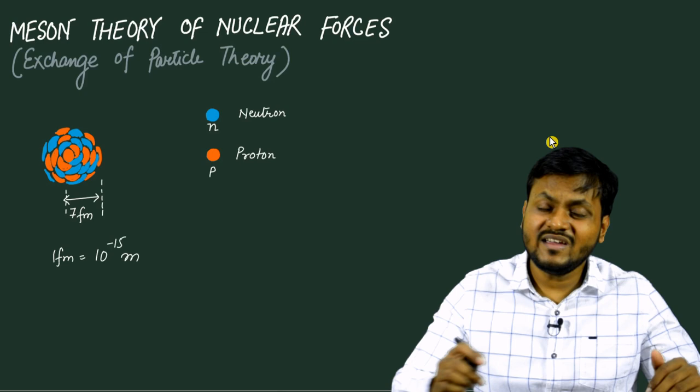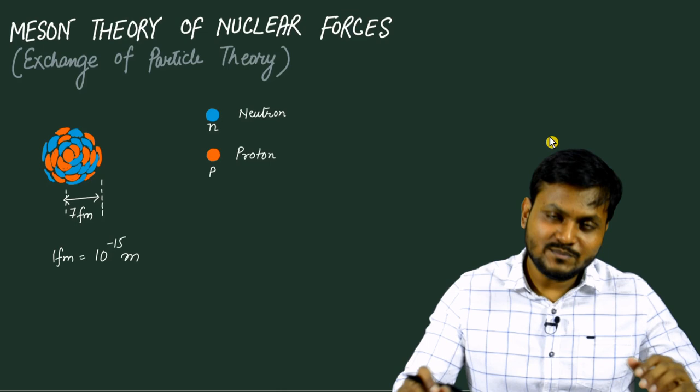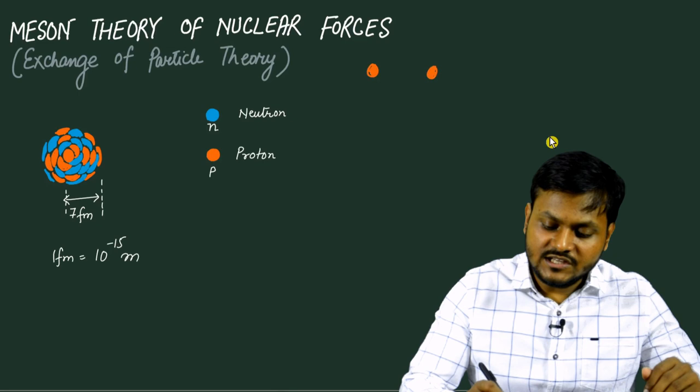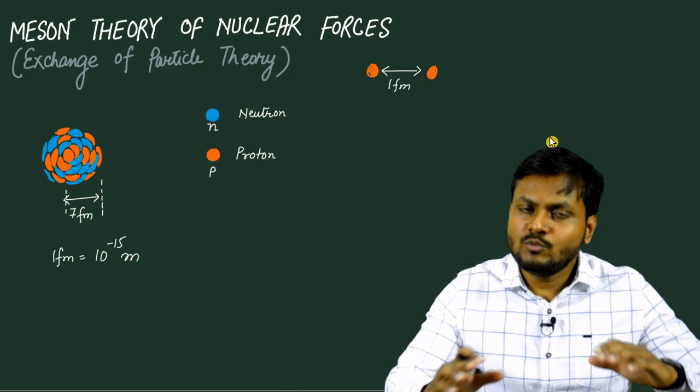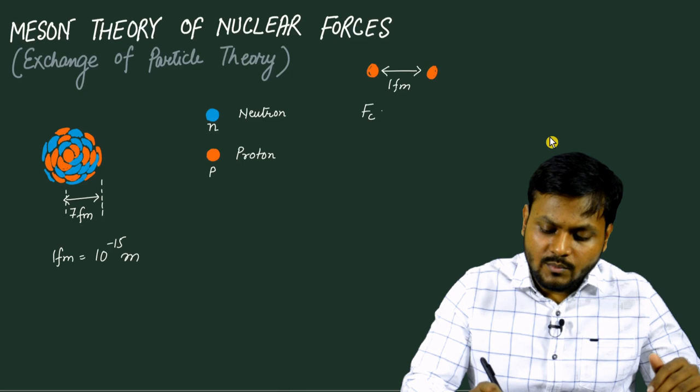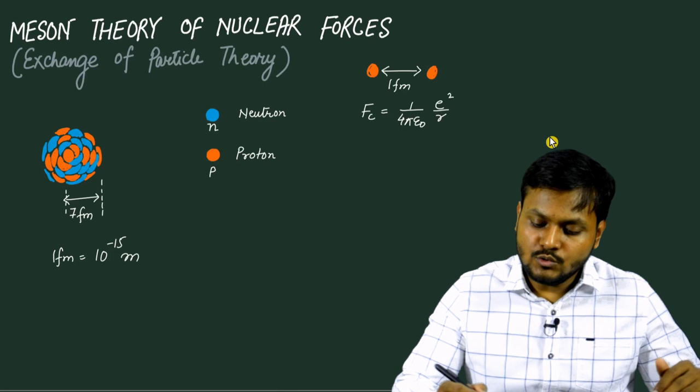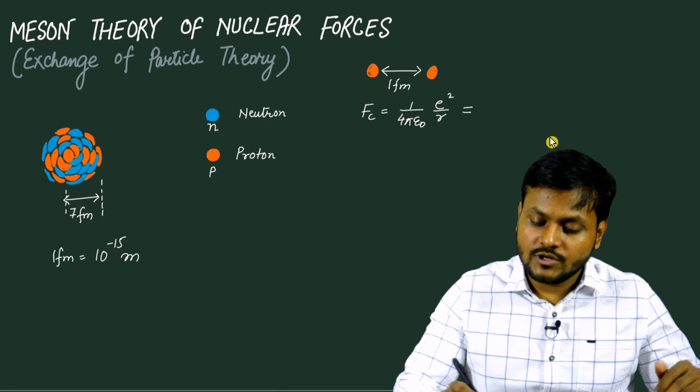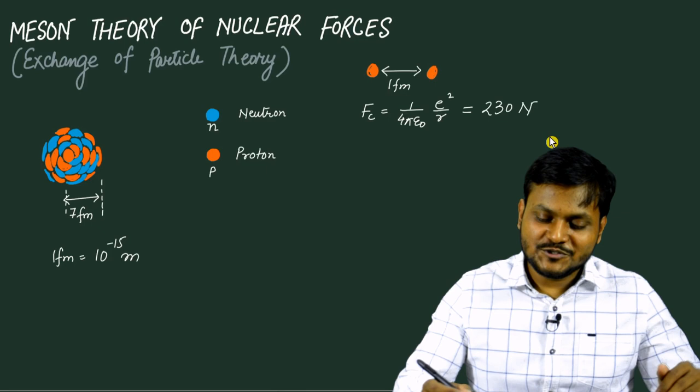Just so that you appreciate the nature of this problem, let me do a very simple calculation. If you look at two protons which are near each other — let's suppose they are at a distance of one femtometer — then we can calculate the Coulombic repulsion that exists between these protons from Coulomb's force law. If we put in the values of this constant, electronic charge, and a distance of around one femtometer, it turns out that this calculation gives us an amount of around 230 newtons.